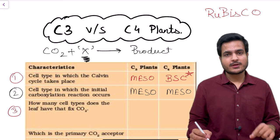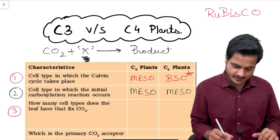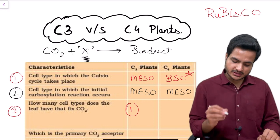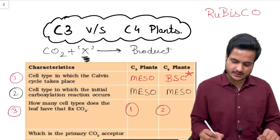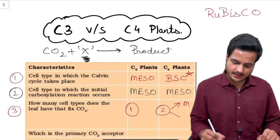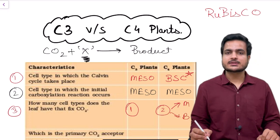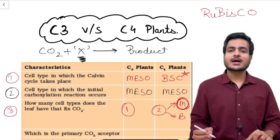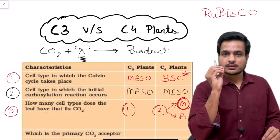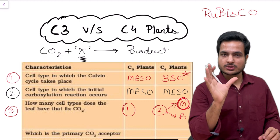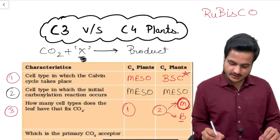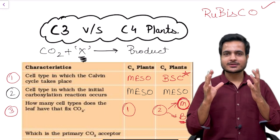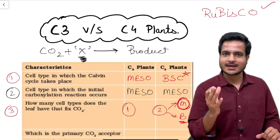In C3 plants, we have only one type of cell — mesophyll cells. But in C4 plants, we have two types of cells: mesophyll cells and bundle sheath cells. In mesophyll cells, the initial primary carbon dioxide fixation product is formed. And in bundle sheath cells, we have Rubisco enzyme and there occurs the king of photosynthesis — the Calvin cycle.